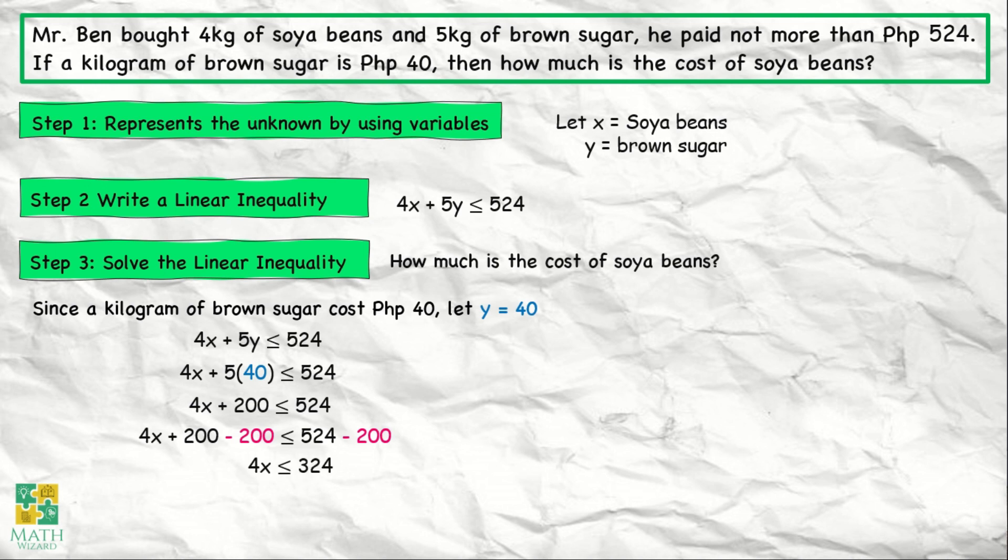This becomes 4x plus 200 minus 200 is less than or equal to 524 minus 200. Simplifying, this becomes 4x, since 200 minus 200 is 0, so only 4x remains on the left side. On the other side, 524 minus 200 becomes 324. Now, to find the value of x, we divide both sides by 4. That becomes 4x over 4 is less than or equal to 324 over 4. So x is less than or equal to 81.